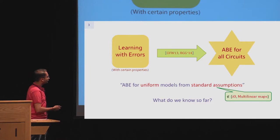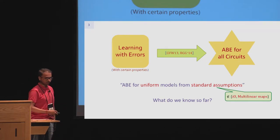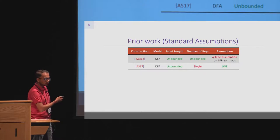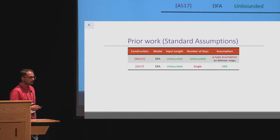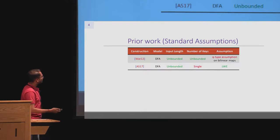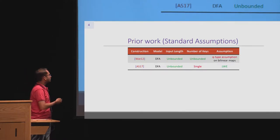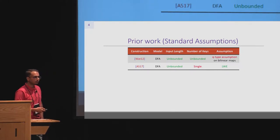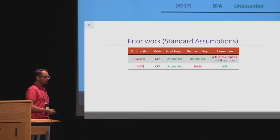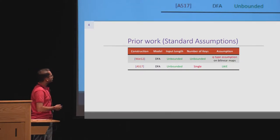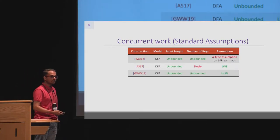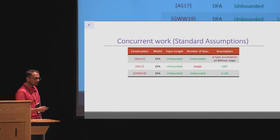The question is: what do we know about ABE for uniform models from standard assumptions? As we saw in the last talk, the first construction was given by Brent, for ABE for DFA with unbounded attribute lengths and unbounded number of keys from the Q-type assumption, a parameterized assumption. Subsequently in 2017, Agrawal and Singh gave a construction for the same primitive with unbounded attribute length from the LWE assumption, but restricted to the single-key setting. Concurrently, Gong et al. construct the same primitive from the standard k-linear static assumption, with unbounded input length and unbounded number of keys.